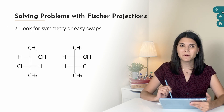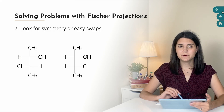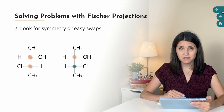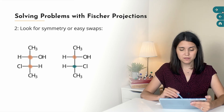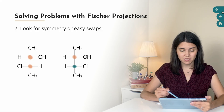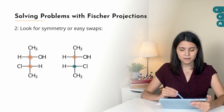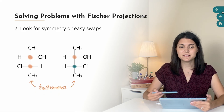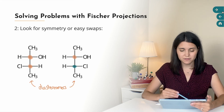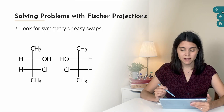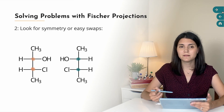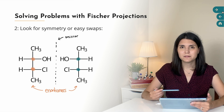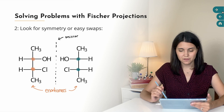My second tip is to look for symmetry or easy swaps. For example, if the bottom carbon of the left-hand molecule has chlorine on the left and hydrogen on the right, and on the right-hand molecule those two substituents are swapped, then these two molecules have the same configuration on the top carbon but a swapped configuration on the bottom carbon — that means they are diastereomers. Similarly, if you can easily see that both chirality centers have swapped and the molecules look like mirror images of one another, those two molecules are enantiomers.